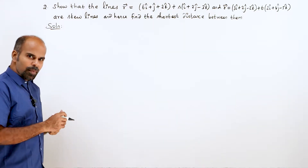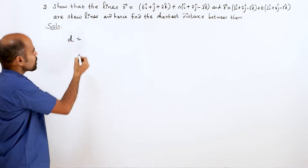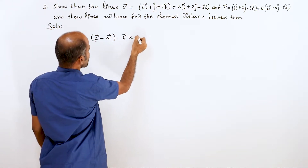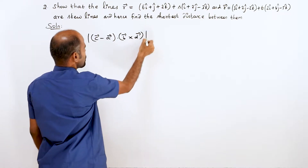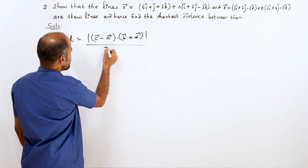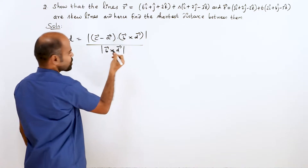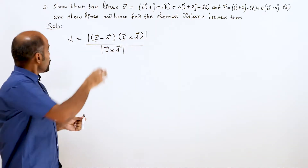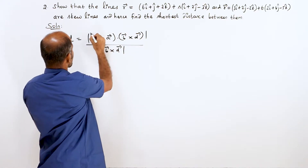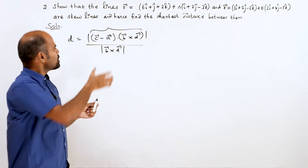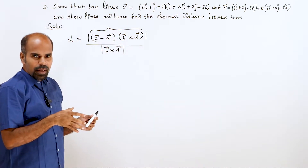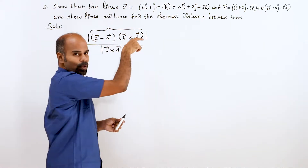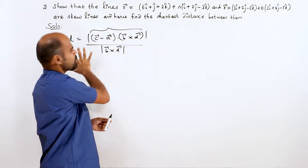First, let's write the shortest distance formula. d is equal to c vector minus a vector dot b vector cross d vector, divided by the magnitude of b vector cross d vector. This is the formula for the shortest distance between two skew lines. If the numerator is 0, the lines are intersecting; if not 0, they are definitely skew lines. So to prove skew lines, we check the numerator.